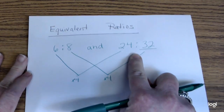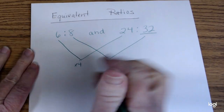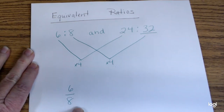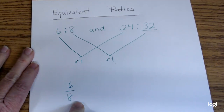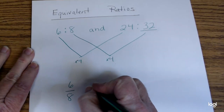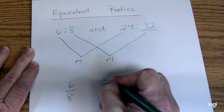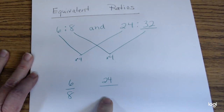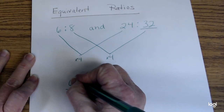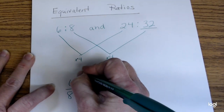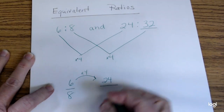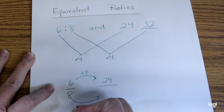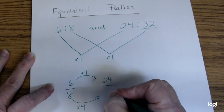Some of you prefer to write that ratio as a fraction, which is perfectly fine. A ratio can be written that way. We still find that we're multiplying by 4 on top, and we still would say that we're multiplying by 4 on the bottom.